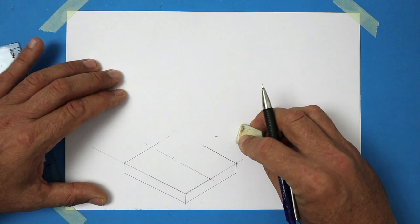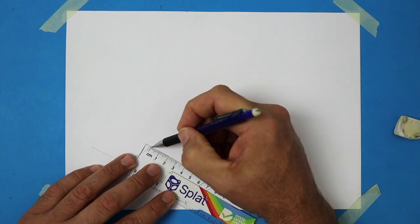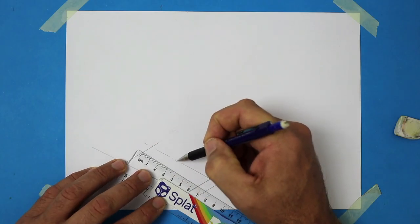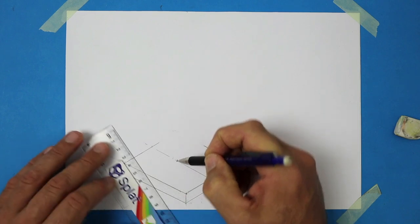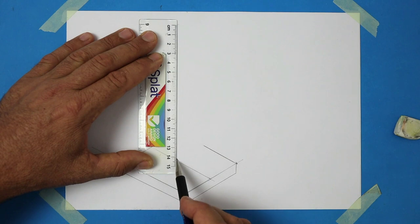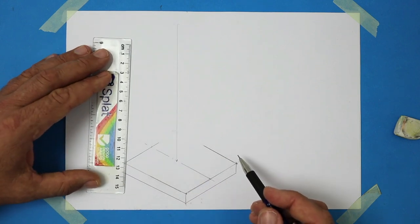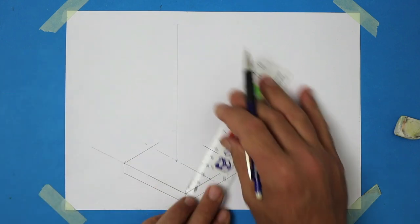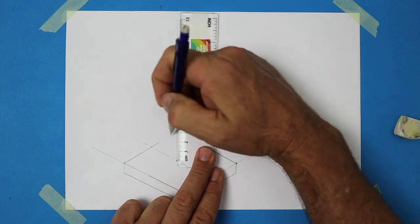Great. So measure 30 millimeters along that guideline, the center line, and then draw a very light vertical line. Now on that line, let's measure up 30 millimeters for the design that I'm making.